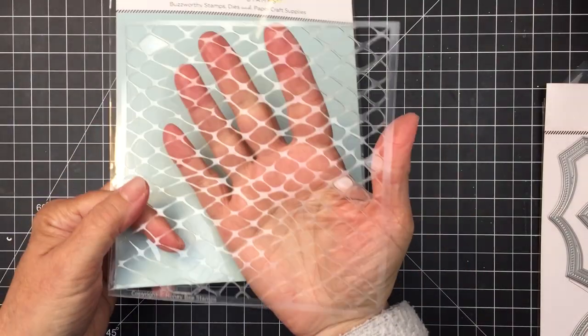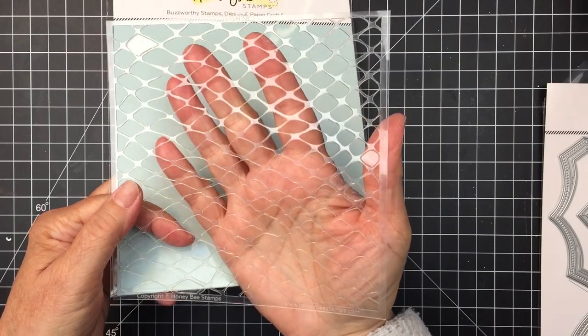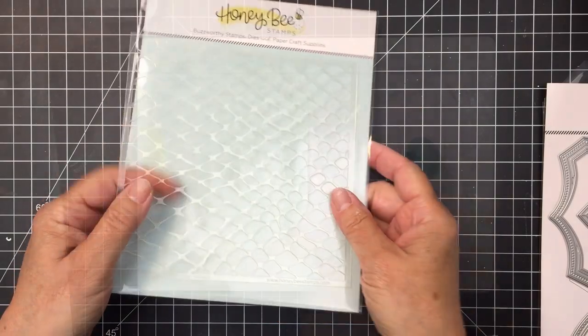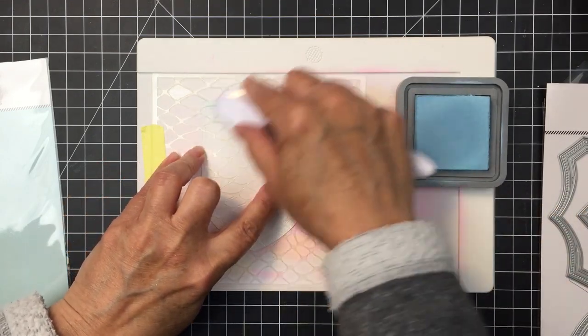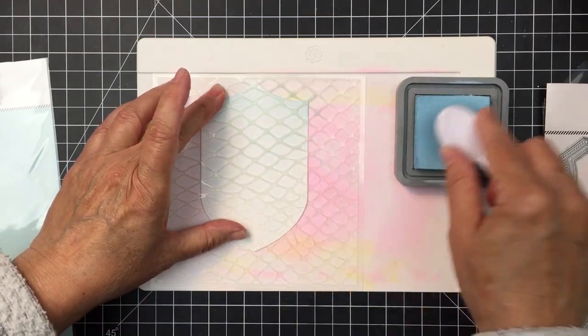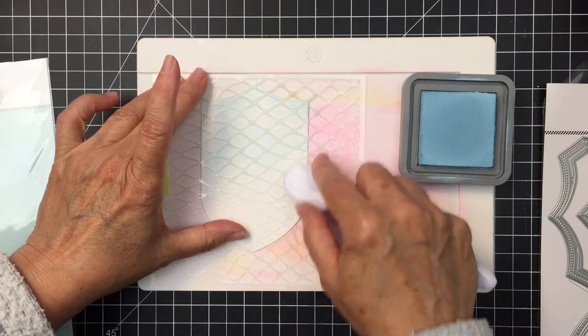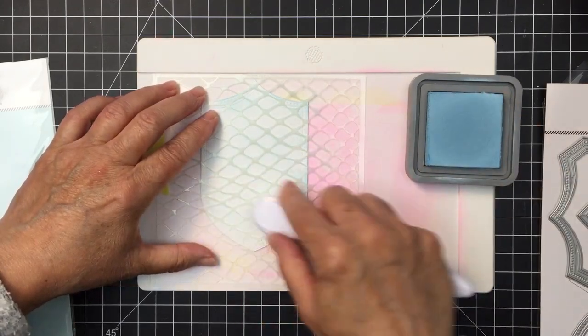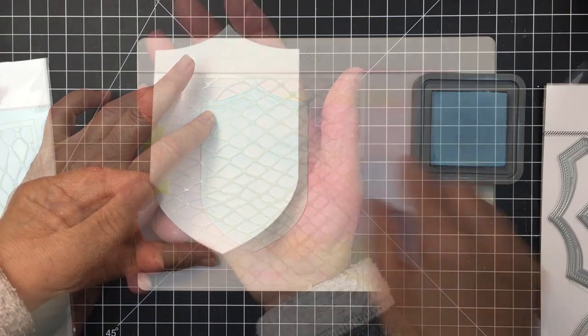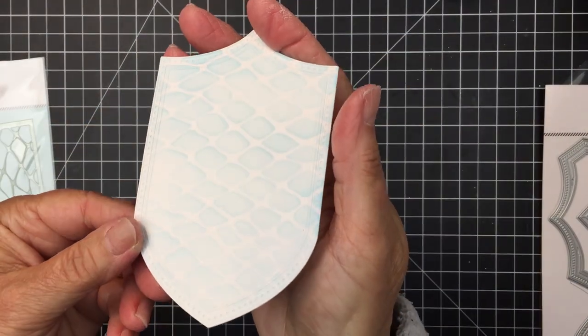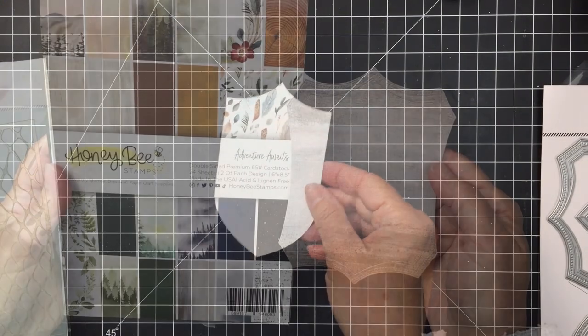I'm going to be using this really great fishnet stencil as well for part of my project today. I'm going to start off here by using that on part of the Shield Layering Frames die cuts. I've cut this piece here from some white cardstock using that die cut set and now I'm just using some Distress Oxide Tumbled Glass to blend that fishnet stencil over top.